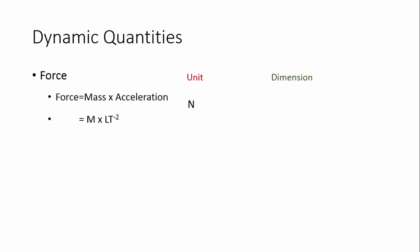Force has the unit of Newton, but we cannot convert this directly to its dimension. We know that force equals mass into acceleration, so mass M into acceleration L·T to the power minus 2 gives the fundamental dimension M·L·T to the power minus 2. Weight also has the same unit — Newton — so the same fundamental dimension applies to weight as well: M·L·T to the power minus 2.